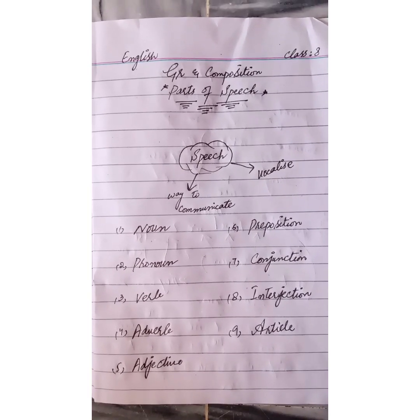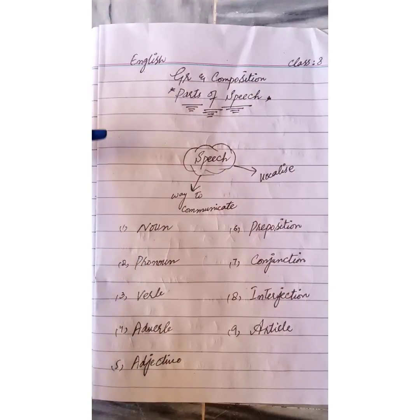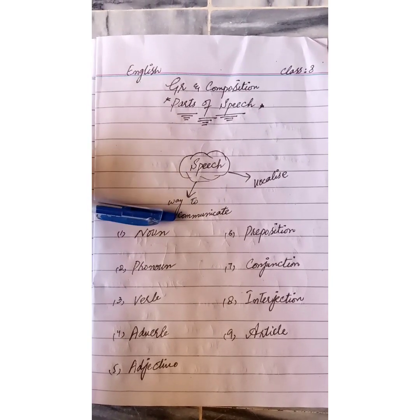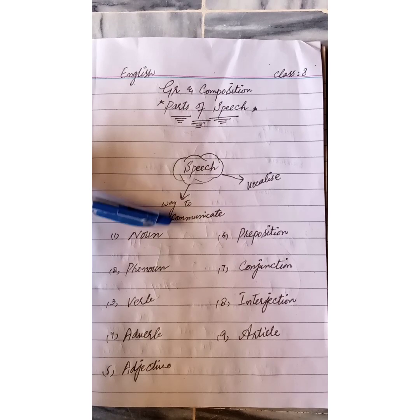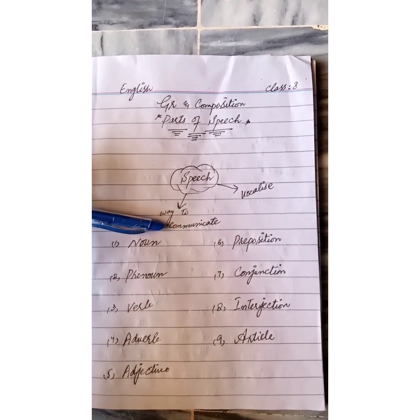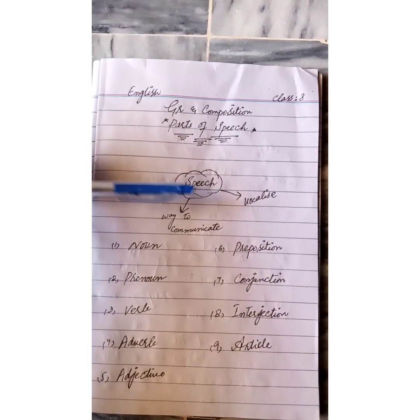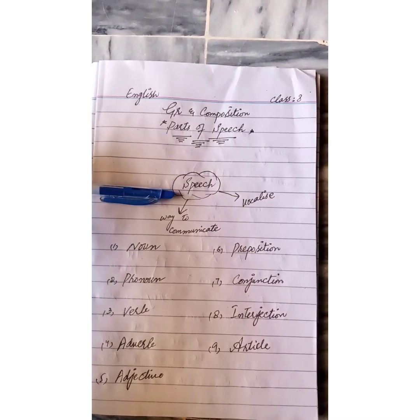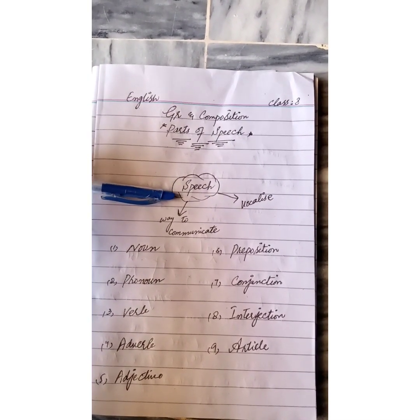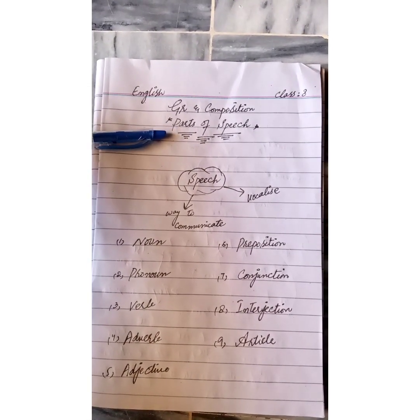First of all you must understand what parts of speech are. Speech is actually a way to communicate. We live in a society and we are social animals — we have to communicate to others the way we want to talk. For this we have to vocalize, and this is called speech. We can disintegrate speech into its smaller pieces, and these are called parts of speech. In English linguistics there are nine parts of speech.